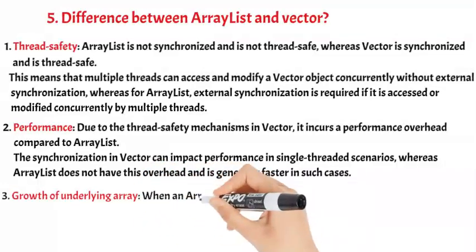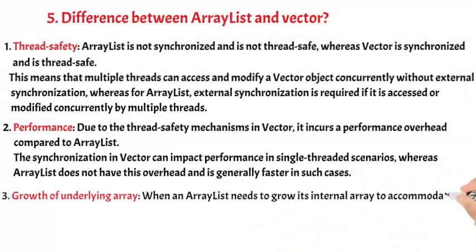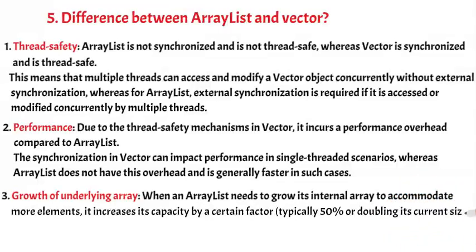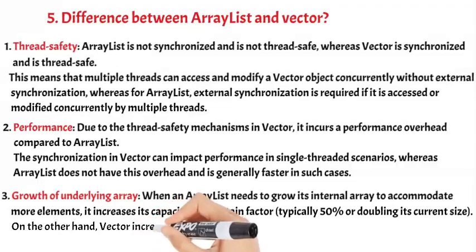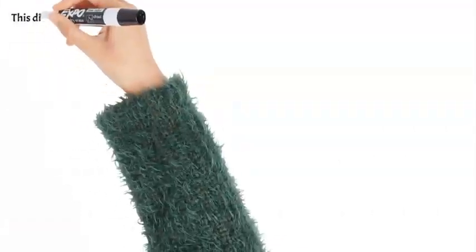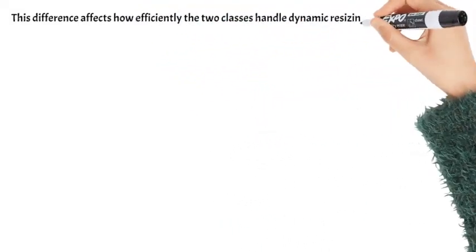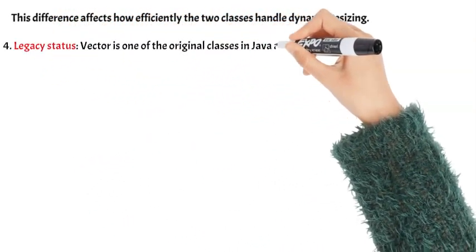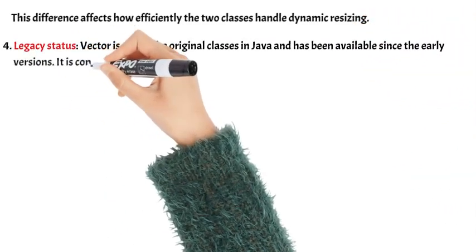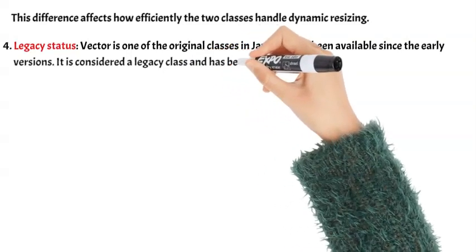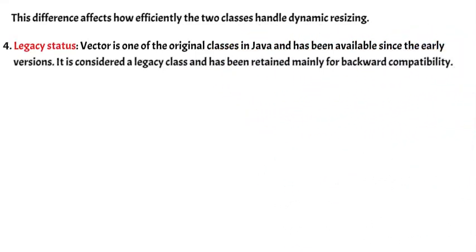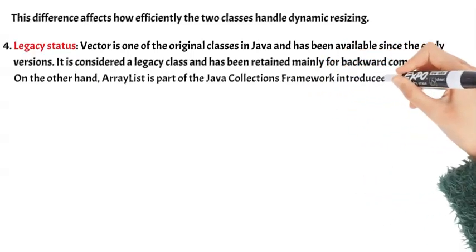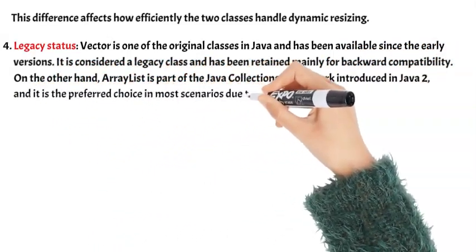Difference 3: Growth of Underlying Array — When an ArrayList needs to grow its internal array, it increases its capacity by a certain factor, typically 50% or doubling its current size. On the other hand, Vector increases its capacity by doubling its size. This difference affects how efficiently the two classes handle dynamic resizing. Difference 4: Legacy Status — Vector is one of the original classes in Java and is considered a legacy class, retained mainly for backward compatibility. ArrayList is part of the Java Collections Framework introduced in Java 2 and is the preferred choice in most scenarios due to its better performance.